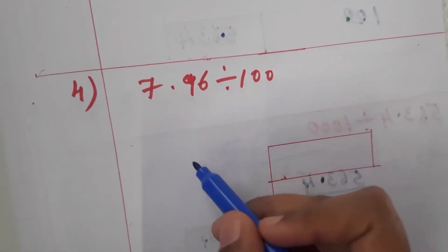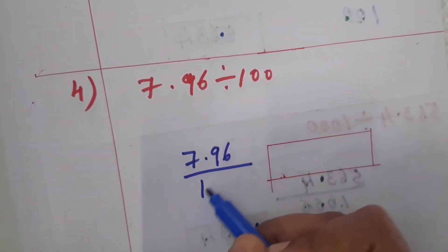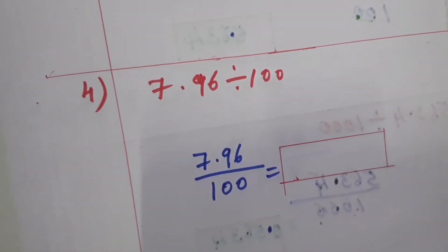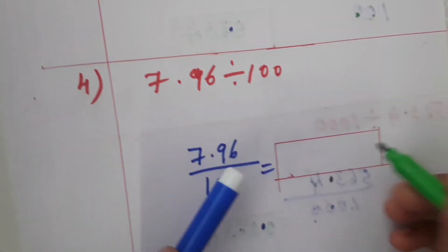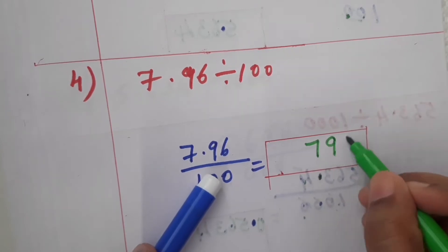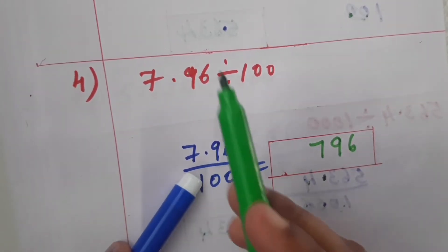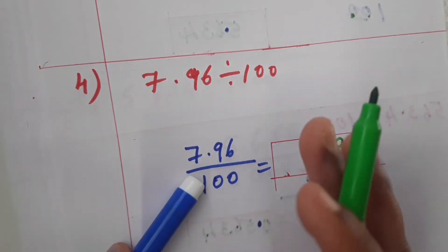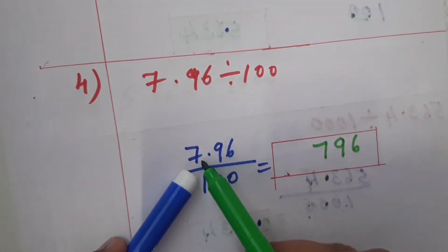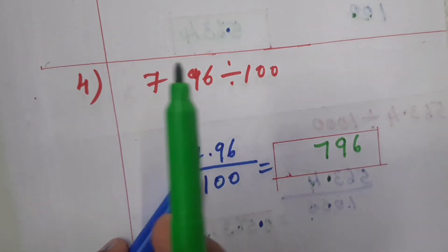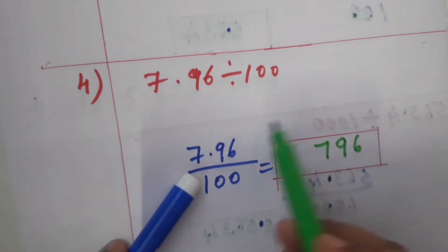Next: 7.96 by 100. Write the number as 796. Now look children — in the previous two sums, there was no decimal point in the numerator. Here the numerator 7.96 is a decimal number.